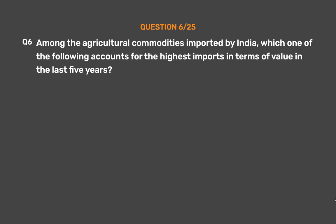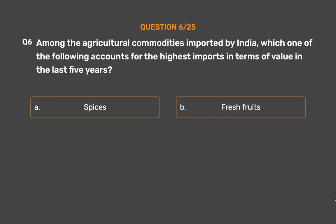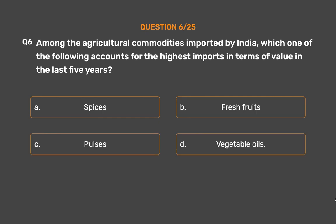Question No. 6: Among the agricultural commodities imported by India, which one of the following accounts for the highest imports in terms of value in the last five years? Option A: Spices. Option B: Fresh fruits. Option C: Pulses. Option D: Vegetable oils.